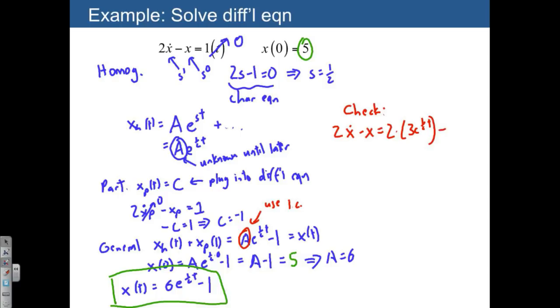And then for x, we just have the 6, the entire quantity, 6 e to the 1 half t minus 1. So if we put these together, 2 times 3 is 6.